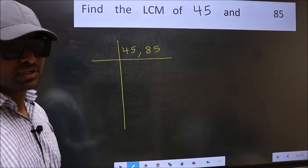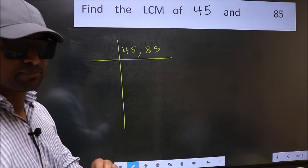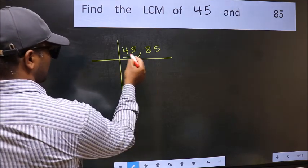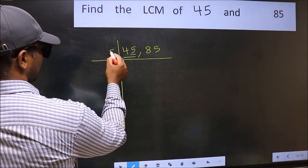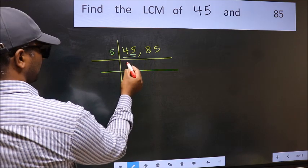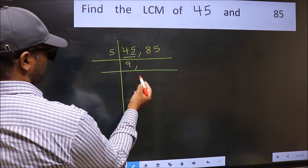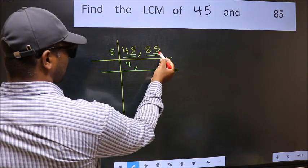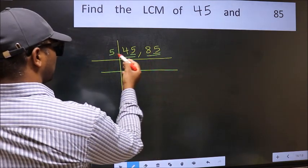Now you should focus on the first number, which is 45 here. In this number, last digit is 5, so take 5. When do we get 45 in the 5 table? 5 nines is 45. The other number is 85. Last digit is 5, so this number is divisible by 5.